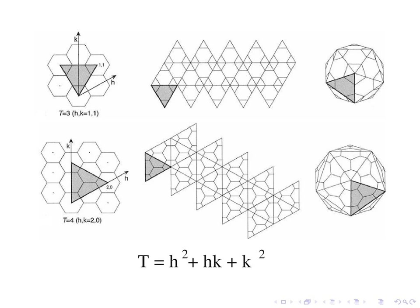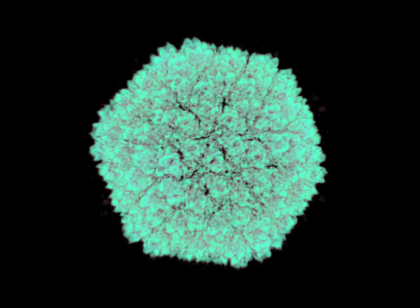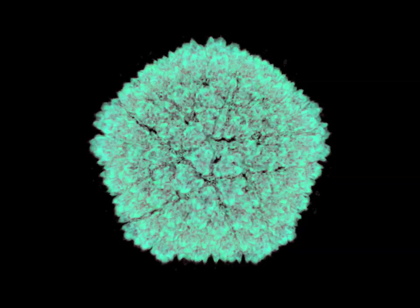We measure such complexity by the value T, defined to be h squared plus hk plus k squared. The top example has T equal to 3, the bottom has T equal to 4.